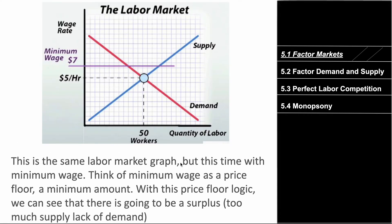This is the same labor market graph, but this time we have minimum wage. For the factor market and for wages, most of the time you're going to see a minimum wage that's above equilibrium. You're never going to see a minimum wage below equilibrium. Minimum wage is very similar to a price floor — it's basically the minimum a wage can actually be. There will never be a maximum wage. If you have a wage above equilibrium, you're going to see a surplus; a wage below equilibrium, you'll have a shortage.